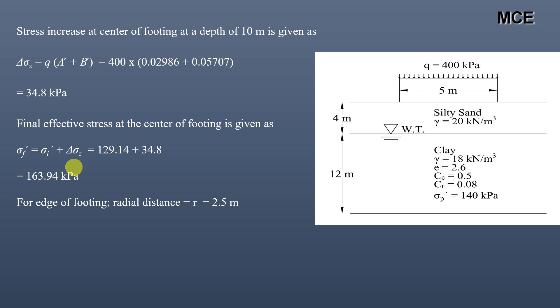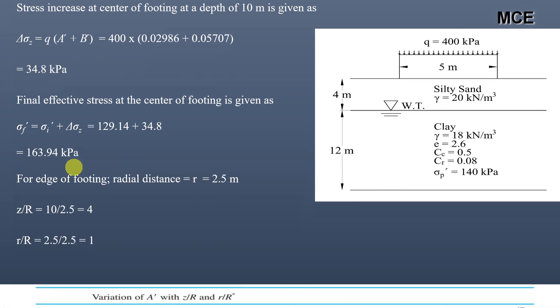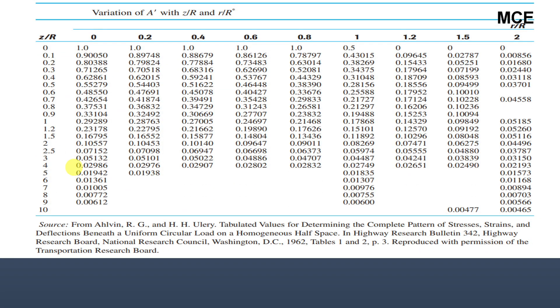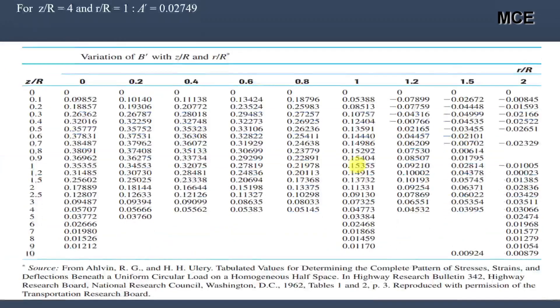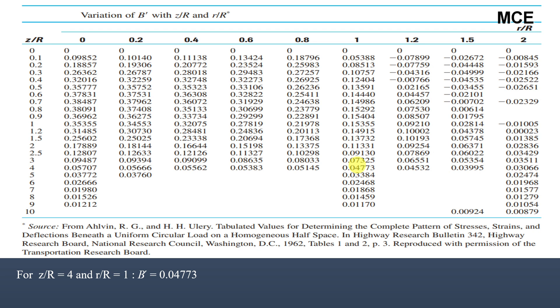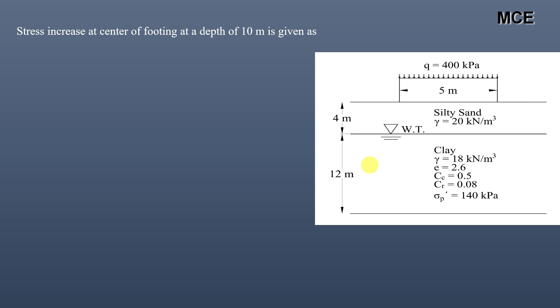At the edge, depth is still 10 meters, so z/R = 10/2.5 = 4 and r/R = 2.5/2.5 = 1. Using the chart, the value of A′ for z/R = 4 and r/R = 1 is 0.02749, and the value of B′ for z/R = 4 and r/R = 1 is 0.04773.